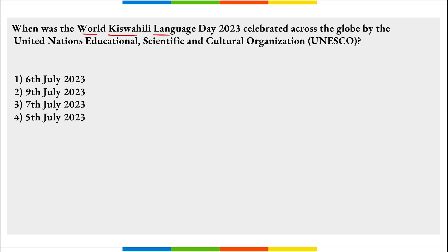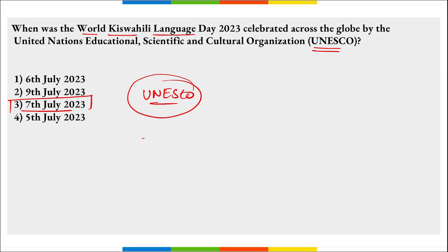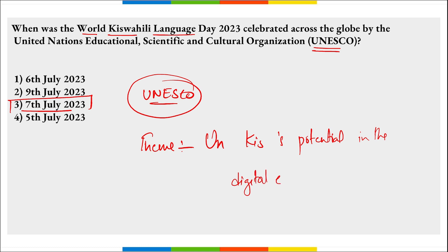When was World Kiswahili Language Day observed by UNESCO? It was observed on 7th July 2023 with the theme 'Unleashing Kiswahili's Potential in the Digital Era.' The day highlights the role of Kiswahili in promoting cultural diversity and encouraging dialogue among civilizations. In 2023, it marks the second commemoration of World Kiswahili Language Day. Kiswahili is the first African language recognized by the United Nations.